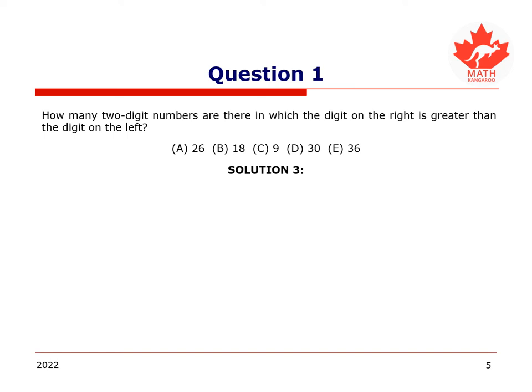Now, let us count all possible two-digit numbers. There are 10 choices for the first digit, as we are considering digits 0 to 9, and there are also 10 choices for the second digit, as we are again considering digits 0 to 9, for a total of 100 two-digit numbers.